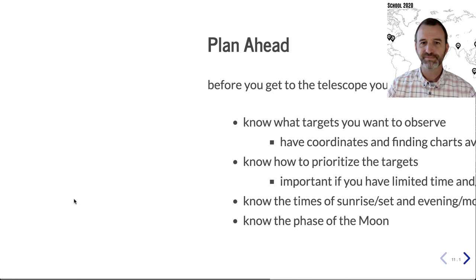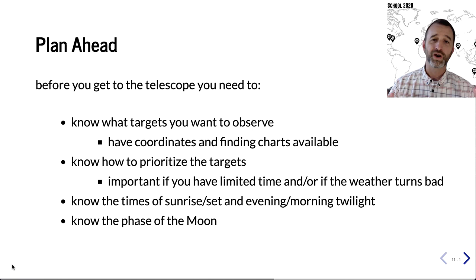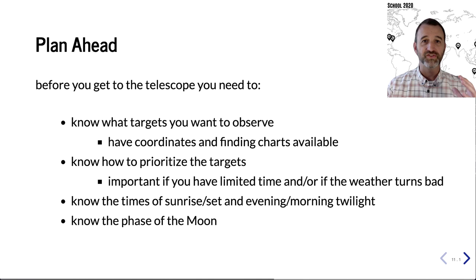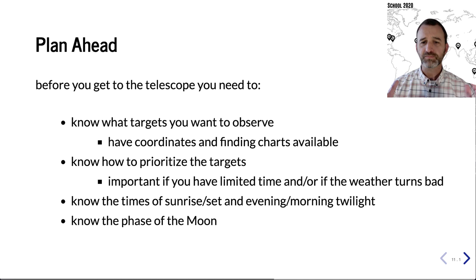To observe well, you need to plan ahead: know where you are in the world, where your targets are, and have priorities. Maybe a target sets early but you want to get another one first — you need to plan that out. You also need to know when the sun sets, when twilight begins, and the phase of the moon. The moon can really ruin your night — it's a big bright light. So you have to account for all these things and make a plan for how you're going to observe.